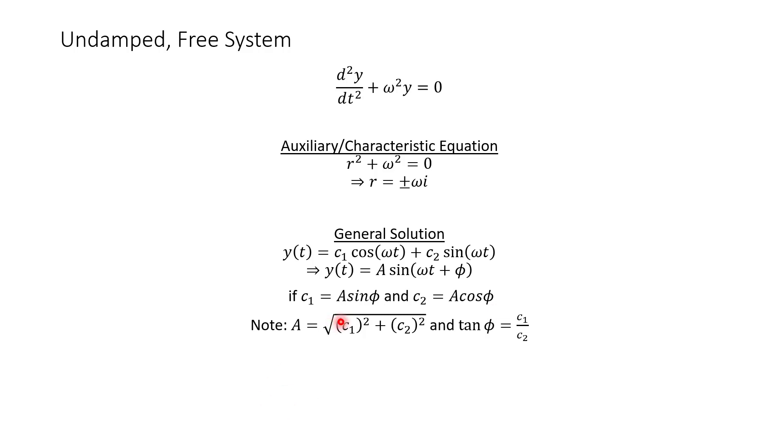And then if you wanted to solve for A, A is actually, think of the Pythagorean theorem here, square root of c1 squared plus c2 squared. And then you can find phi by saying that tangent of phi is just c1 divided by c2.